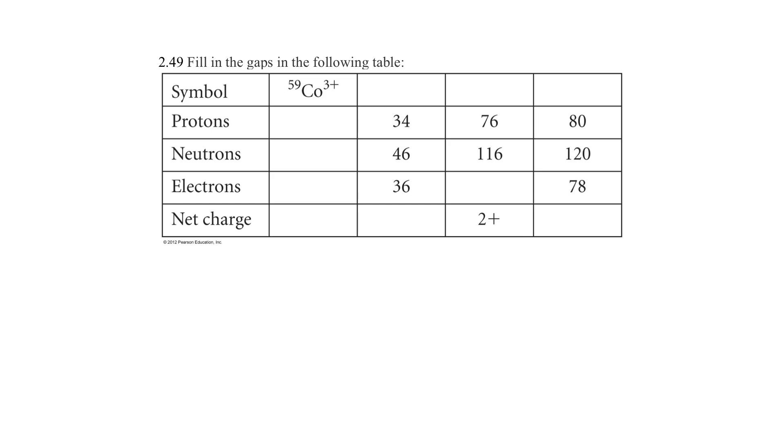All right, so in the case here of cobalt-59, it is three positive. All right, so let's think this through. If it's three positive, it must have three less electrons than protons. Well, we can find protons simply by going to the periodic table, and the periodic table tells you the atomic number. So either you have the atomic number or you have the symbol.